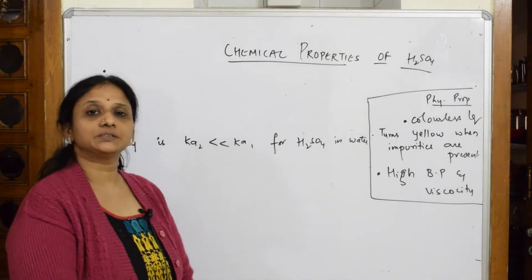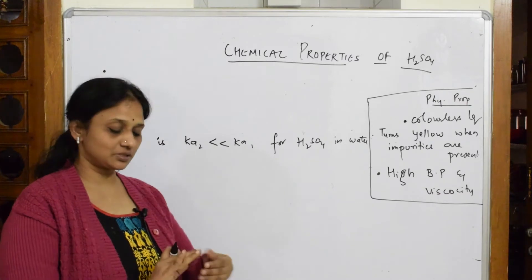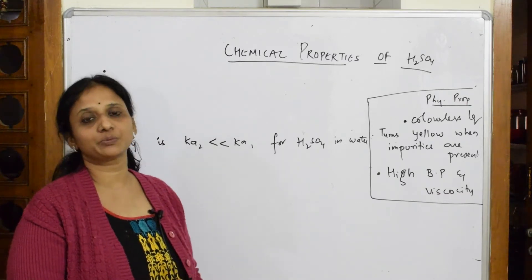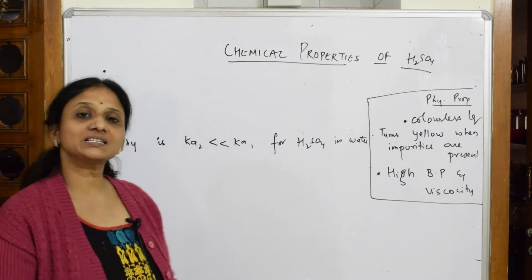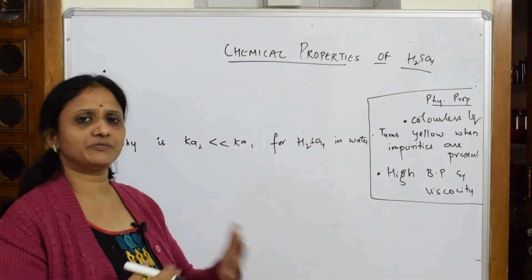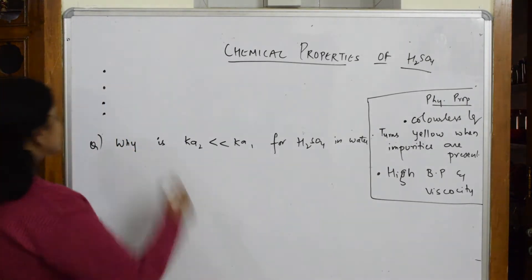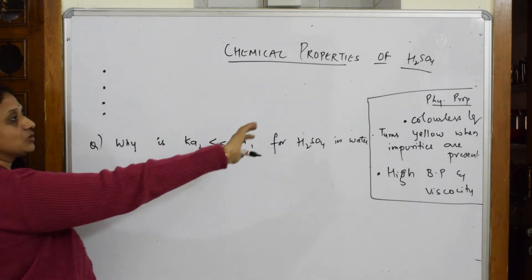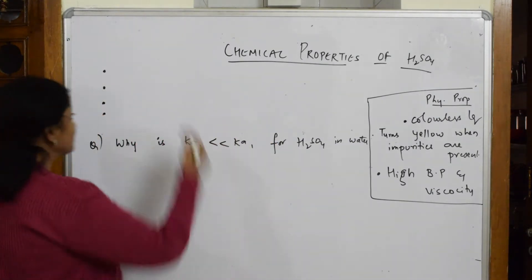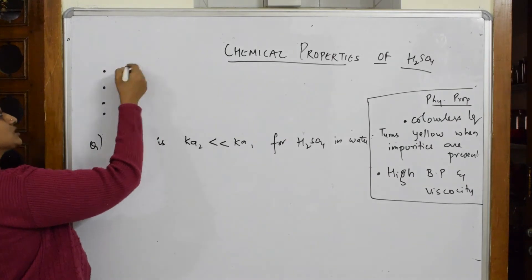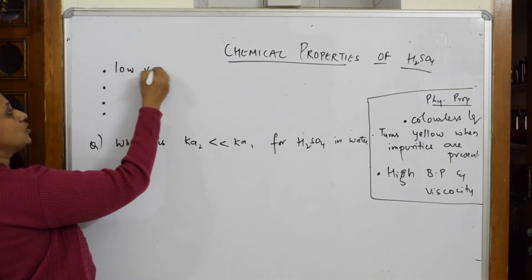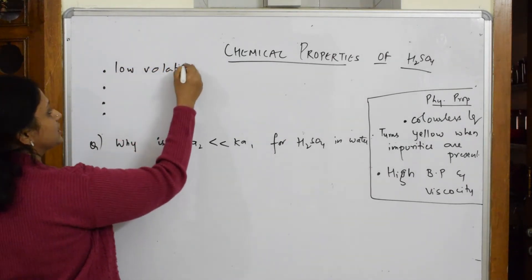Now let's come back to your hydrogen bonding concept and start with the next chemical property of sulfuric acid. Sulfuric acid shows a wide range of reactions. Sulfuric acid is also called the king of chemicals because of its low volatility.